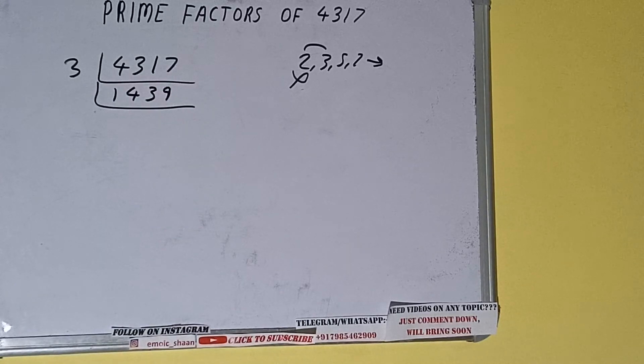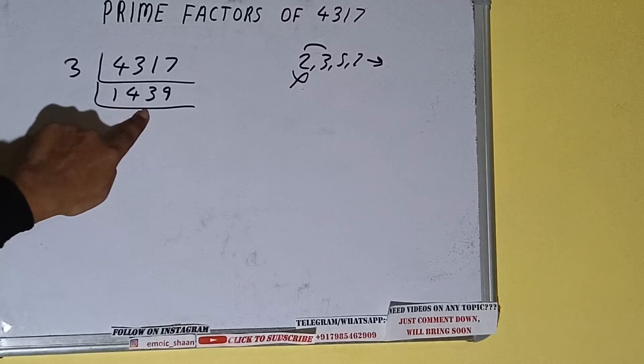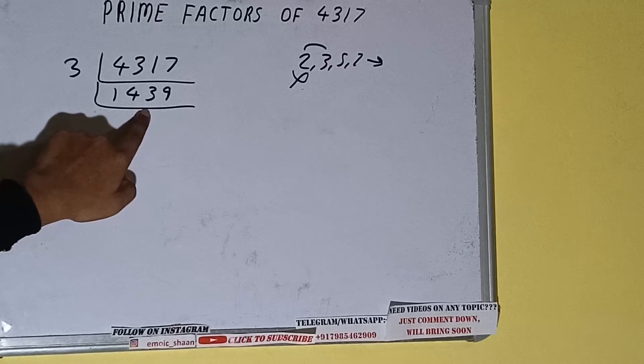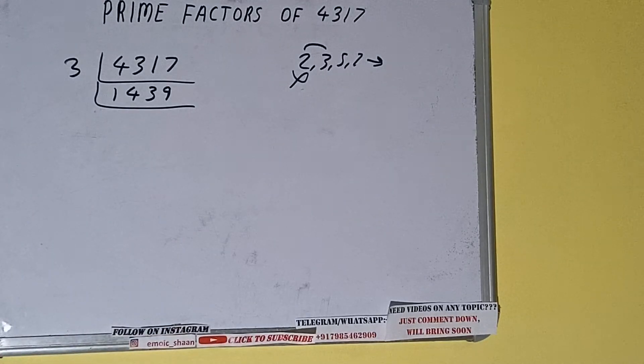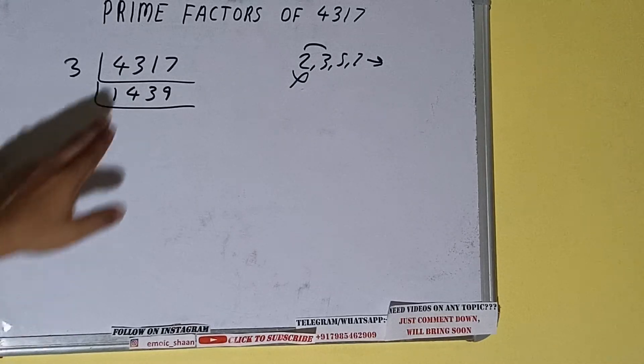Now is this 1439 further divisible by 3? If you check, 3 times 4 is 12, 2, 3 times 7 is 21, 2, 9. It is not divisible by 3, and also not divisible by any other prime number other than the number itself.